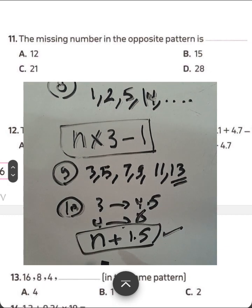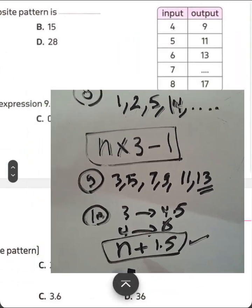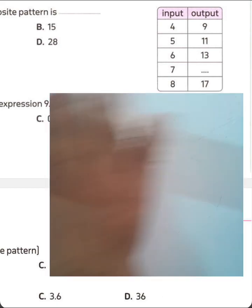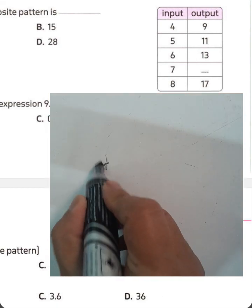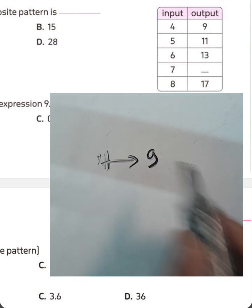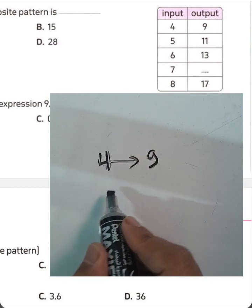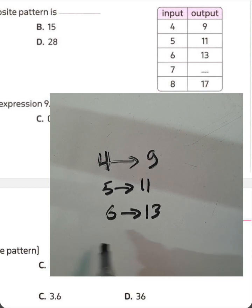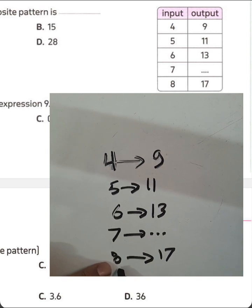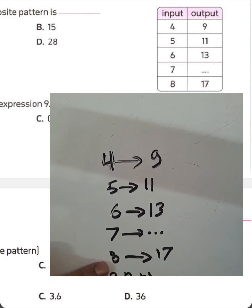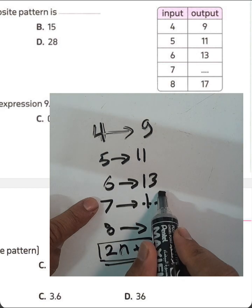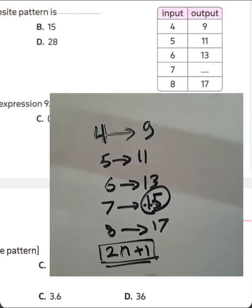Question number 11. The missing number in the pattern: input 4 gives output 9, input 5 gives 11, input 6 gives 13, input 7 gives what? The rule is 2 times N plus 1: 2×8=16, 16+1=17. For input 7: 2×7=14, 14+1=15. Write 15.